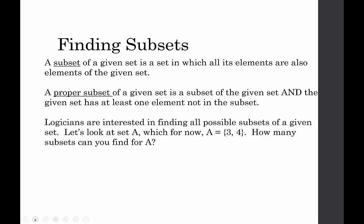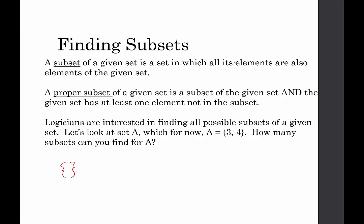You might recall from the previous video that the null set is always a subset, so we're going to start with the null set. Then there's the set that just contains the number 3, and the set that just contains the element 4. And because it's a subset, it can be the set itself, so we always want to include the null set and the set itself. That gives us four subsets.